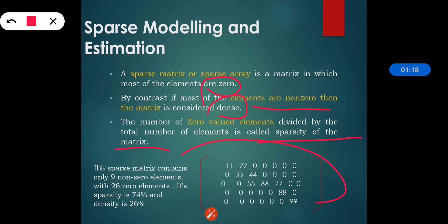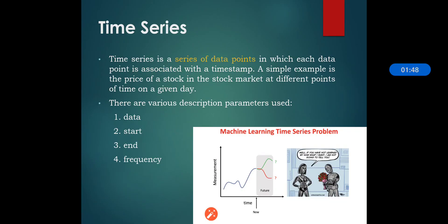In this particular matrix, there are various zero elements. It contains 9 non-zero elements and 26 zero elements. That is why the sparsity of this particular matrix is 74% and the density is 26%.